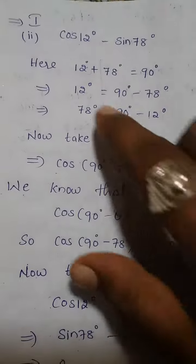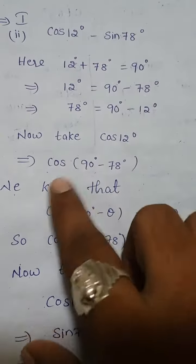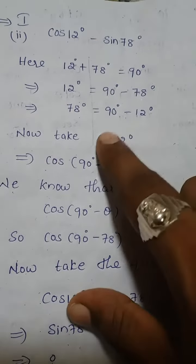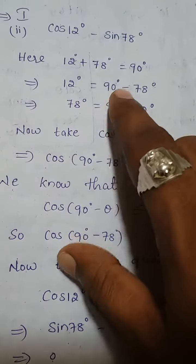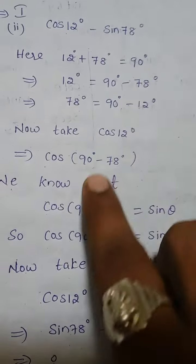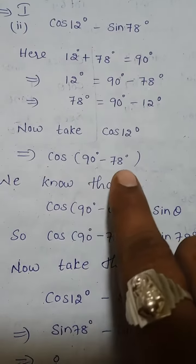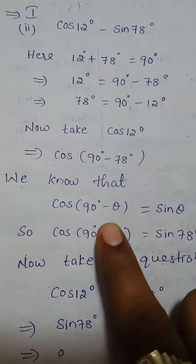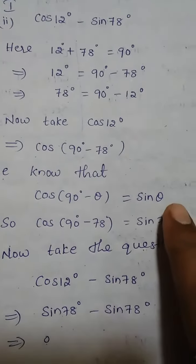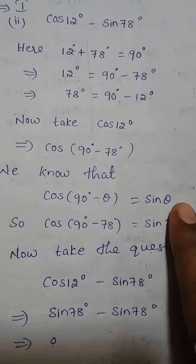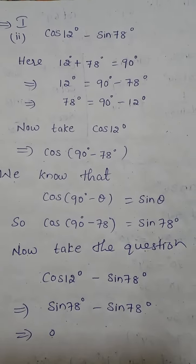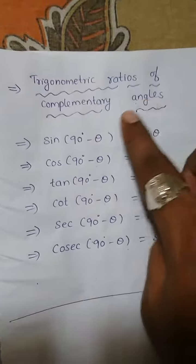Now take cos 12 from the given question. Cos 12 degrees is nothing but the difference of 90 and 78. Substitute that: cos of 90 minus 78 degrees. We know that cos of 90 minus theta is nothing but sin theta. Here we are using this from trigonometric ratios of complementary angles.